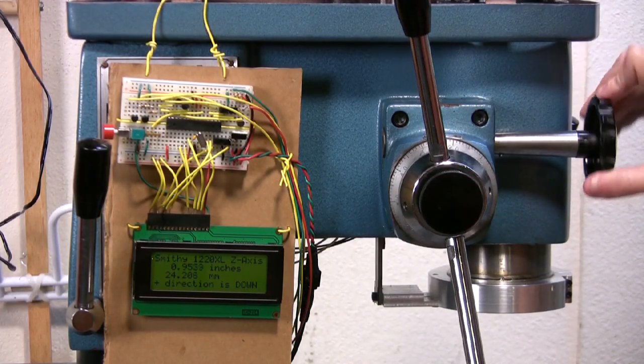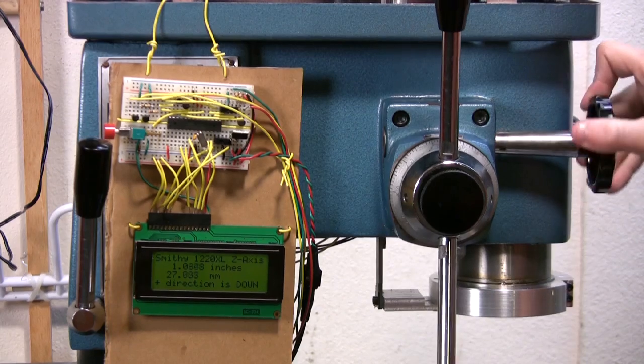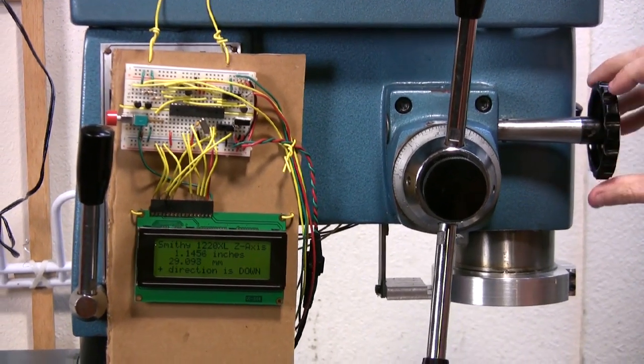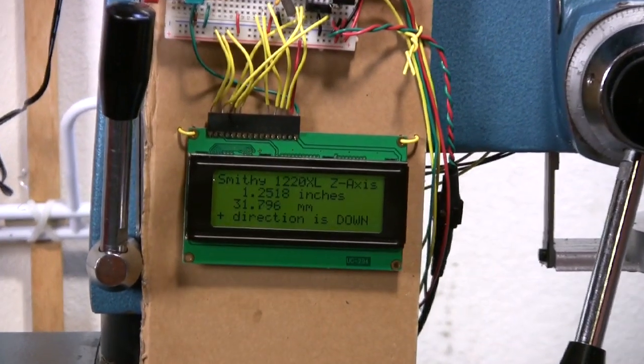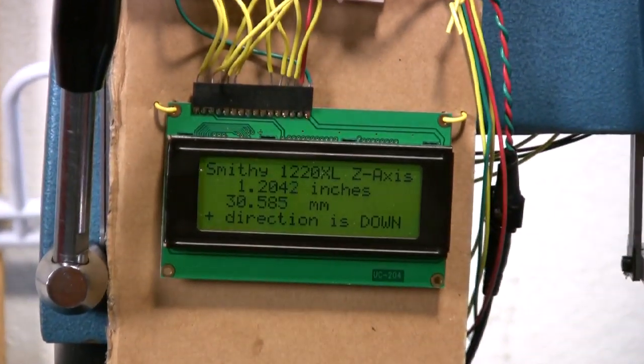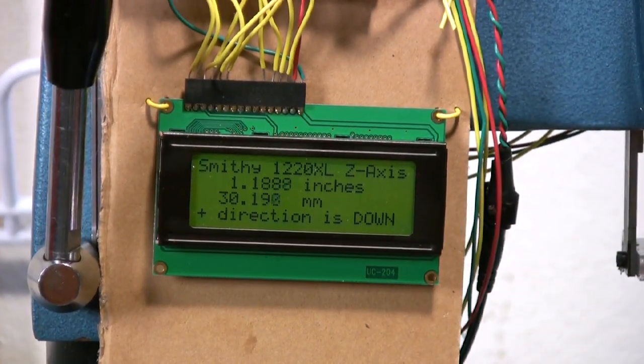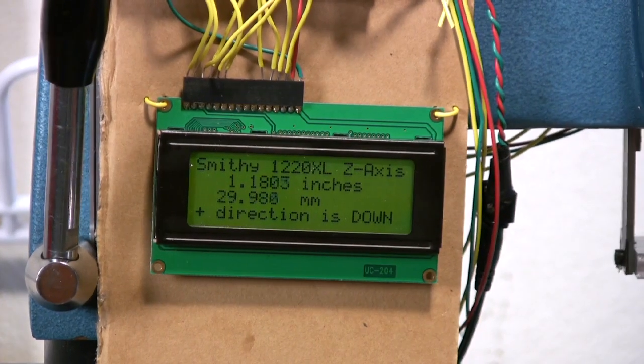Now, when we move the quill up and down, the calipers are opening and closing, and that's sending information to our LCD display over here. Now, instead of being able to move the quill to a particular spot within 42 thousandths of an inch, we can do it within 1 or 2 thousandths.